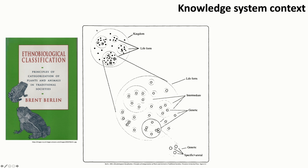To give you a glimpse, he writes that all ethnobiological systems of classification organize the salient organisms in one's environment according to a shallow hierarchy of four to six ranks. In this figure from his book, folk taxa — the term given to groups of organisms as defined by a group's traditional knowledge — are represented by faint gray circles, and biological species, those defined by Western science, are black dots. You can see the different levels of classification.